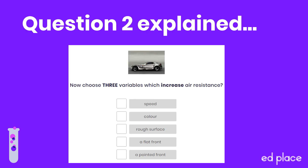With this second question, we're still looking at increasing friction, but it's the air resistance type of friction, where the surface of the car is rubbing against the air as it's trying to push the air out of the way as it drives through it. Looking at the shape of the car, you can see that it's streamlined - designed to push through the air with less resistance. So what about if it's a flat front, like a lorry? Lots of resistance. As the car speeds up, it's got to push more and more air out of the way faster and faster, so speed also increases air resistance. Finally, if the car was covered in grass or fur, that rough surface would increase air resistance. A pointy front reduces friction rather than increases it, and of course the colour of the car makes no difference to its air resistance.